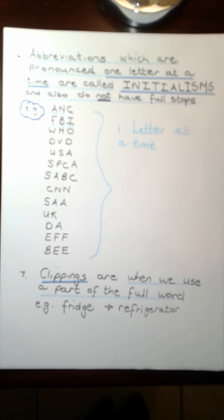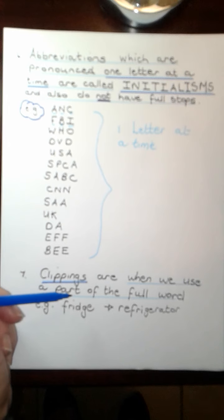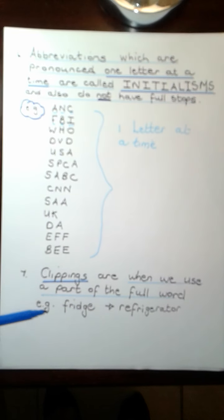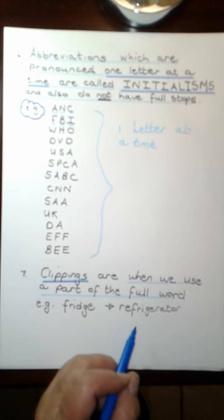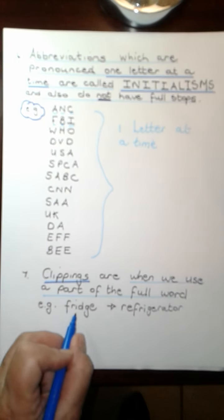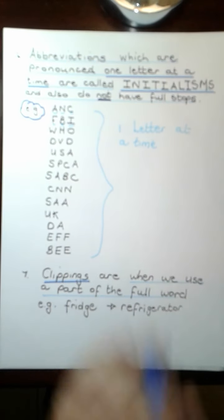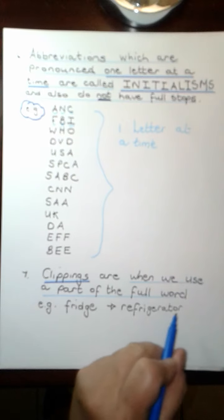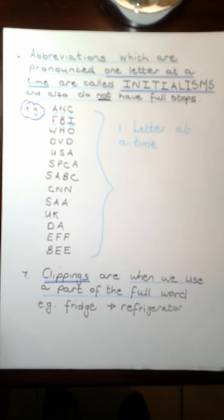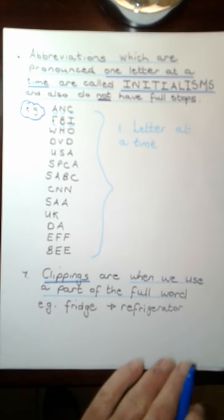Then we also have another feature which you might not have heard or come across, which we call clippings. Clippings are when we use a part of the full word. For example, instead of saying go and put the milk in the refrigerator, your mom will say go and put the milk in the fridge. Therefore, I clip the word. I cut off half of it. And therefore it is called a clipping.